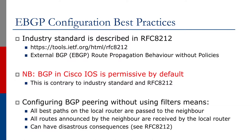Note that BGP in Cisco IOS is permissive by default, which is contrary to the industry standard and RFC 8212. When configuring BGP peering without using filters, this means that all best paths on the local router are passed to the neighbor.